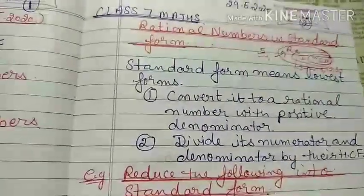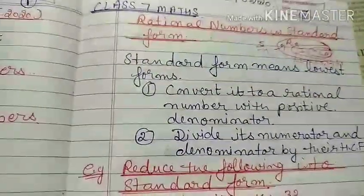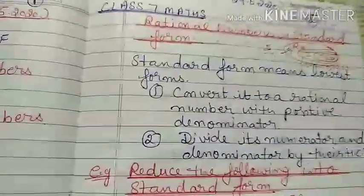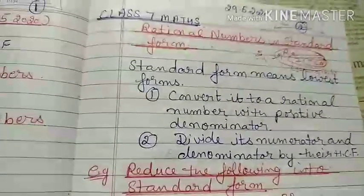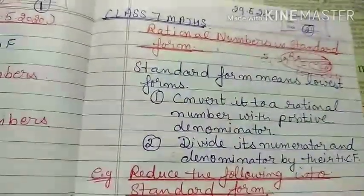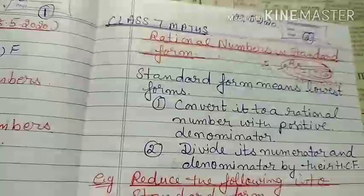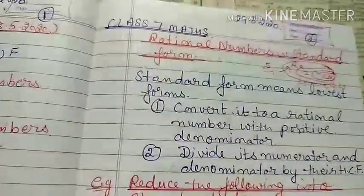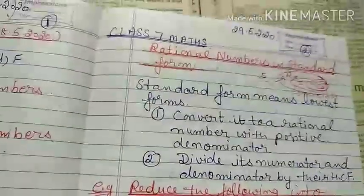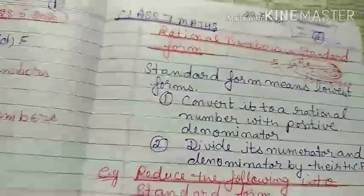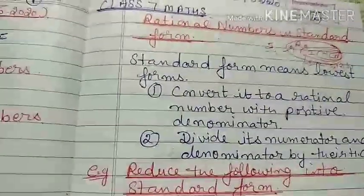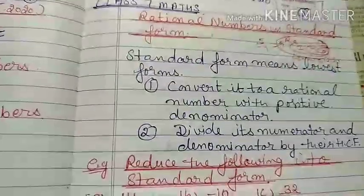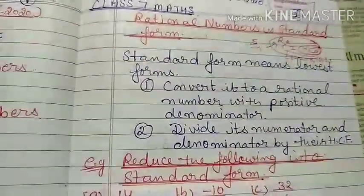Good morning everyone, welcome to Chapter 5 on Rational Numbers. We have already covered positive rational numbers and negative rational numbers — when numerator and denominator have the same sign it's a positive rational number, and when they have opposite signs it's negative. We also covered how to represent rational numbers on a number line. Further, we will do rational numbers in standard form.